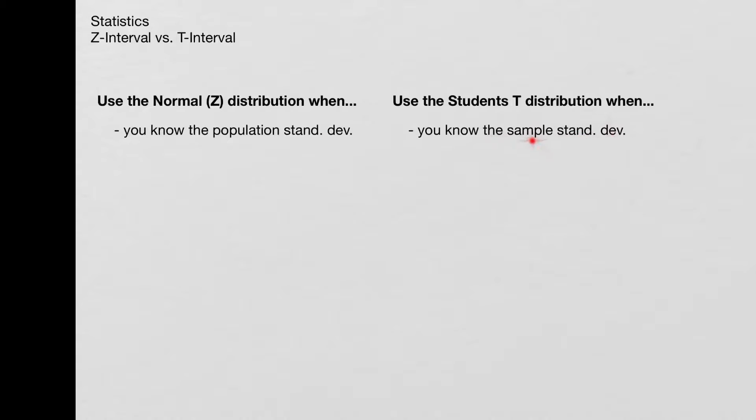Now, if you know the sample standard deviation, then you're going to use the student's t-distribution, because when they tell you the sample standard deviation, you don't know the population standard deviation. So that's how you know that it's going to be the student's t-distribution.